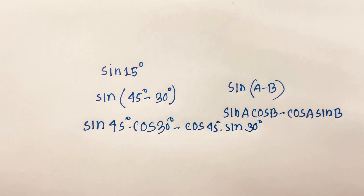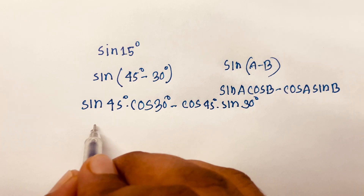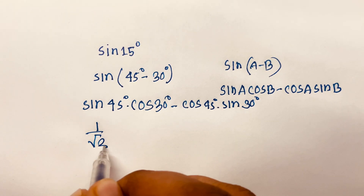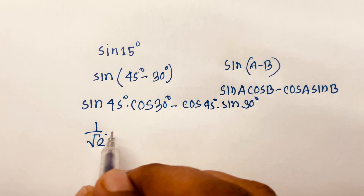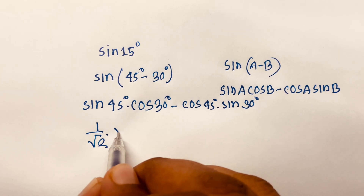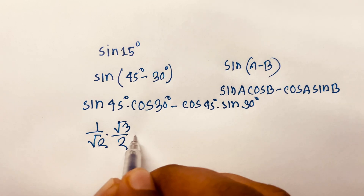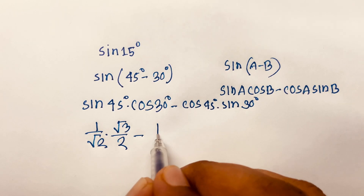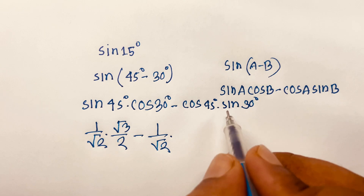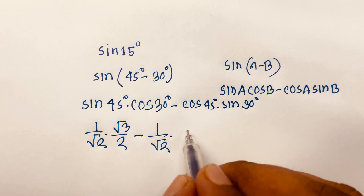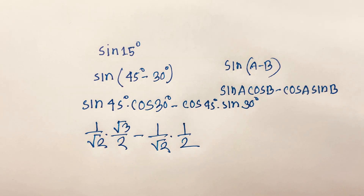Then, sine 45 degrees is 1 over square root 2, times cos 30 degrees which is square root 3 over 2, minus cos 45 degrees which is 1 over square root 2, times sine 30 degrees which is 1 over 2.